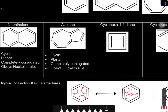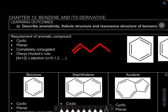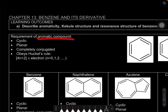There are four requirements. The first one is that it must be cyclic. So it has to be cyclic — for example, if we take pentene, pentene is not an aromatic compound because it's not a cyclic structure. The second requirement is that it must be planar. So mostly if it's cyclic, it also has to be planar.